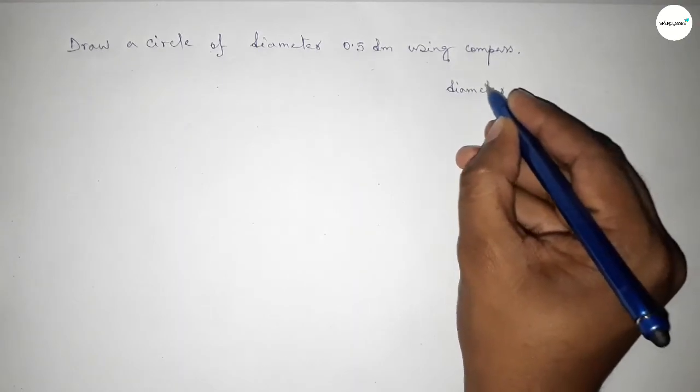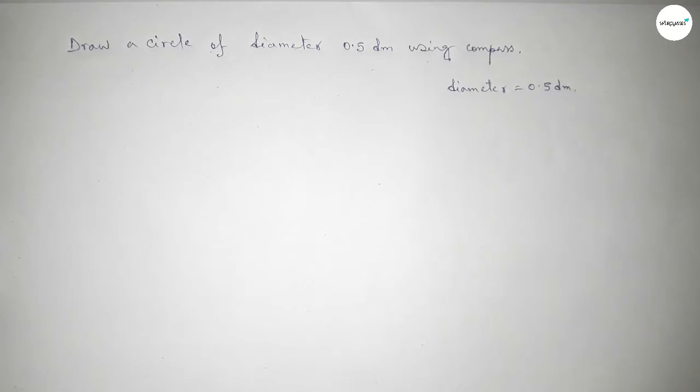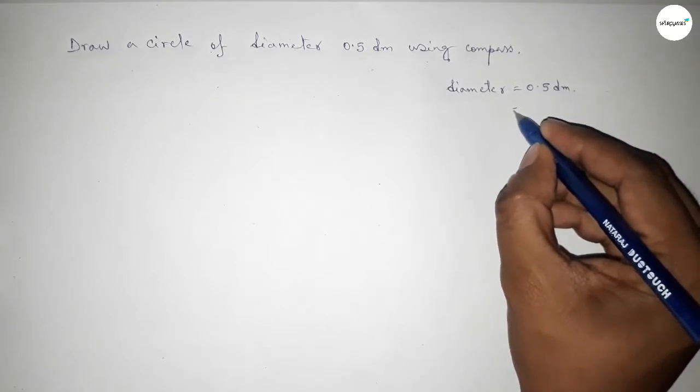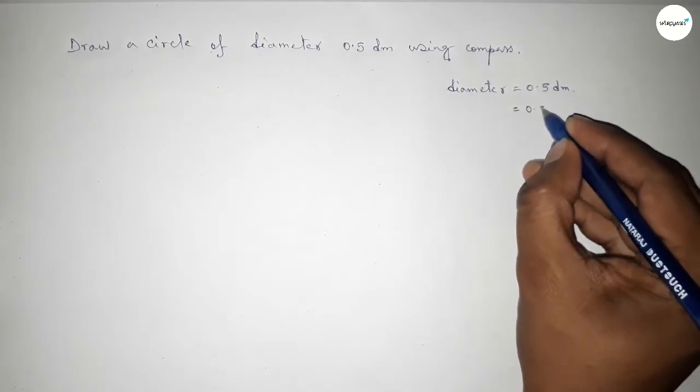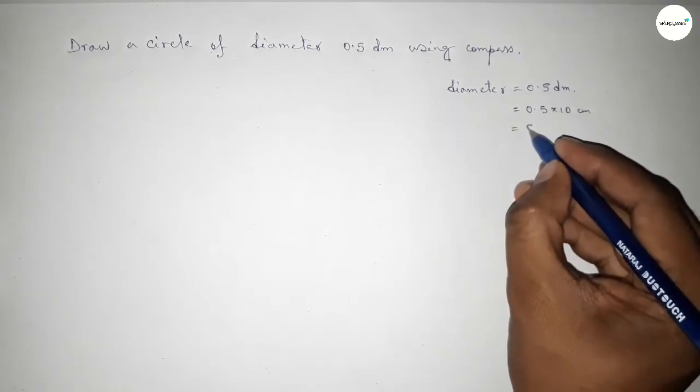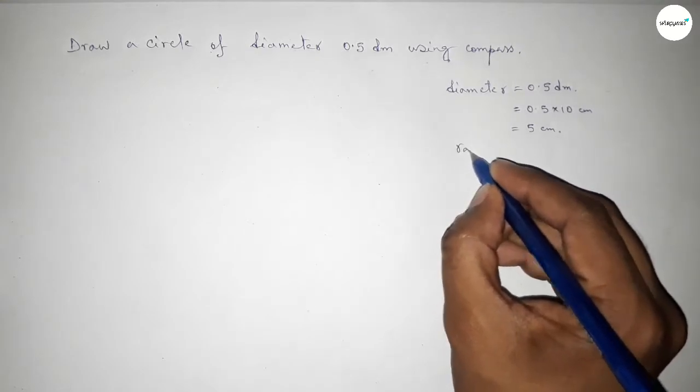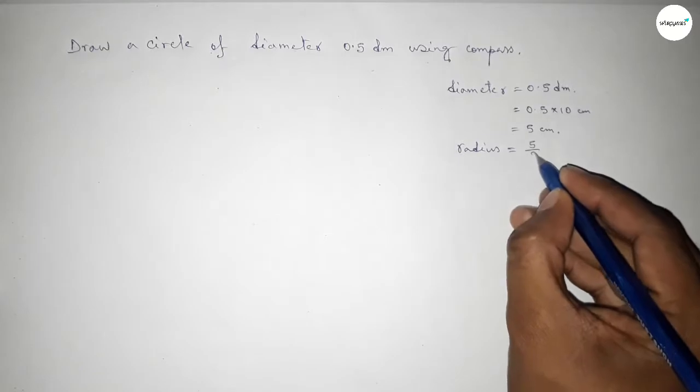Now we convert this decimeter into centimeter by multiplying by 10, so 0.5 × 10 = 5 centimeter. Next, finding the radius by dividing by 2, so this is 2.5 centimeter.